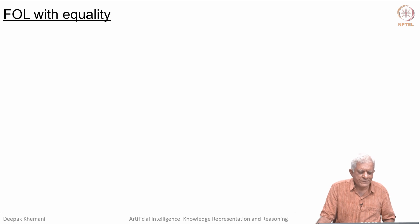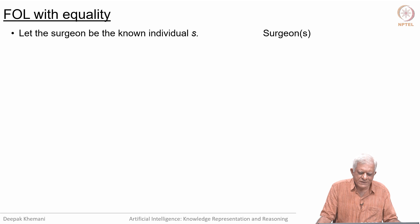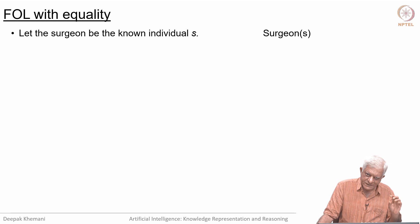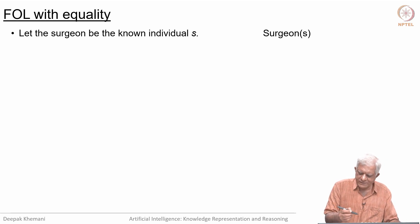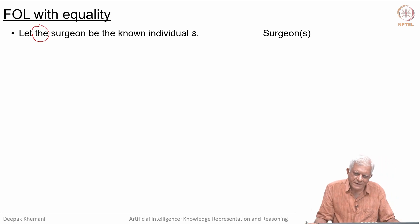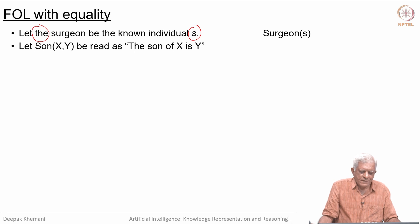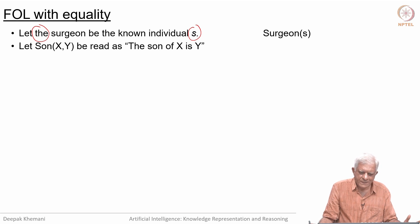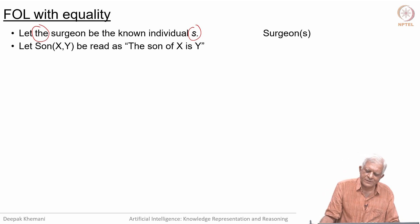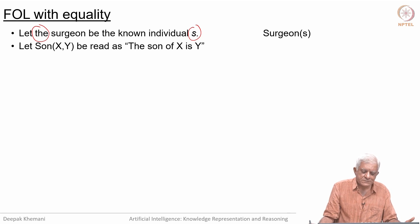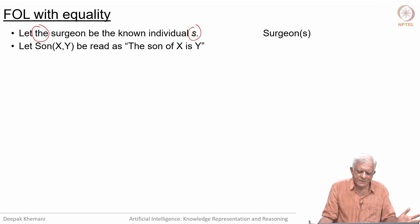Since we are working with first order logic with equality, we will use this logic. First of all, we know that there was a surgeon — this is the surgeon — and since we are using the definite article 'the', we are talking of a specific individual. Therefore we can give that individual a name s, and make the statement that s is a surgeon. We can define a predicate son(x, y), which we will read as 'the son of x is y,' where x is a parent and y is the child.